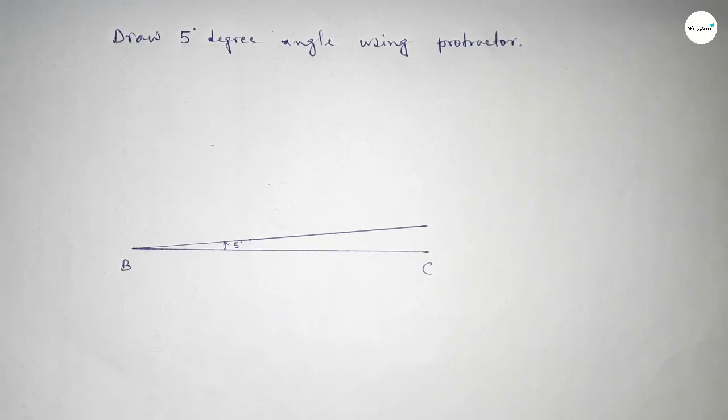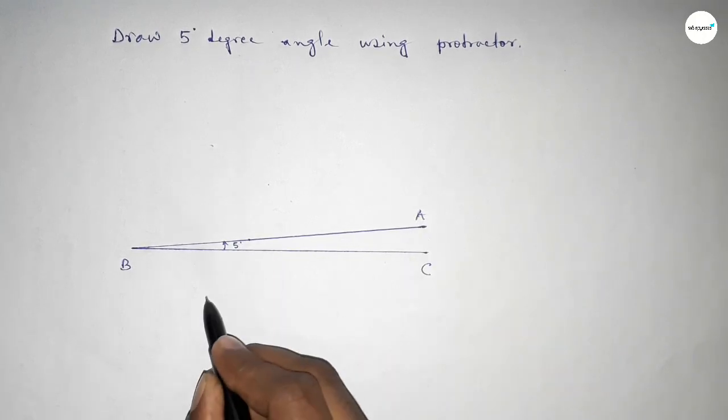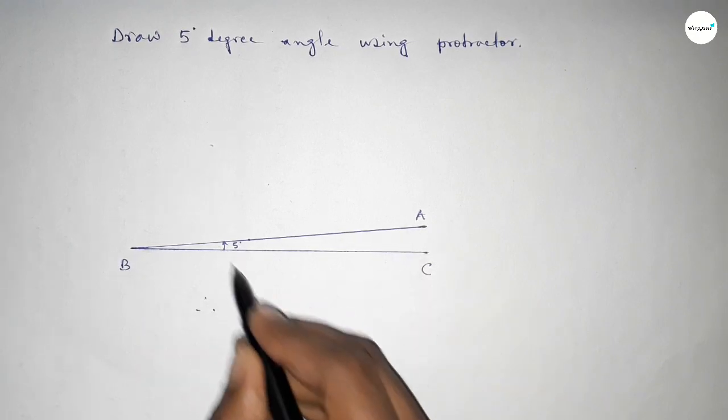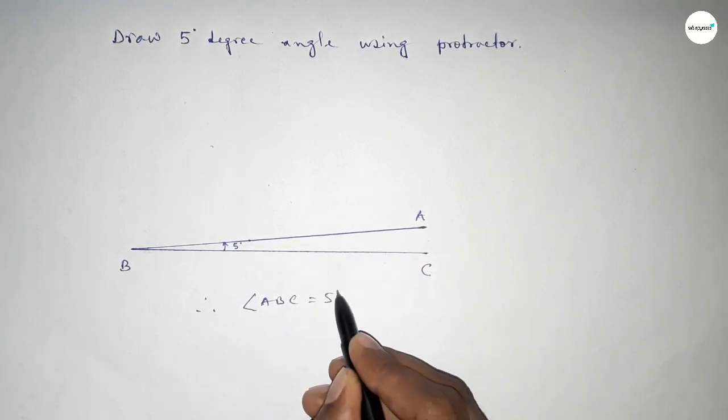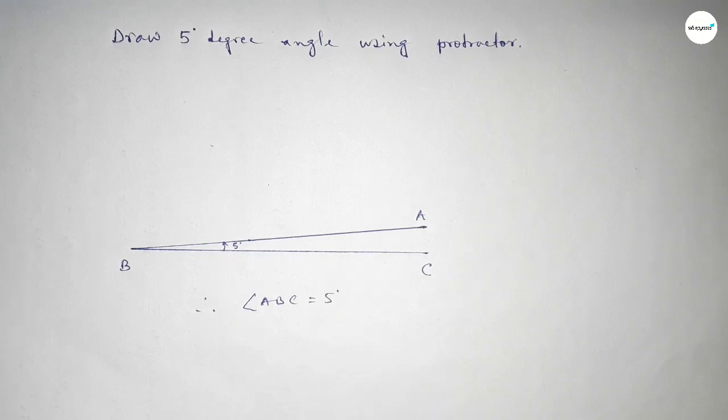5 degrees. Taking here a point A, so angle ABC. Angle ABC equals 5 degree angle. That's all.